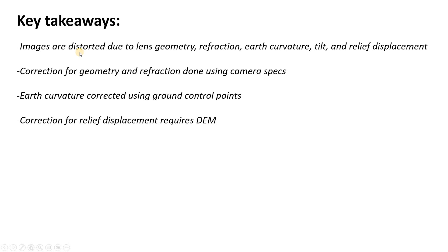We can say that most satellite images are distorted due to lens geometry, light refraction, earth curvature, tilt, and relief displacement. Correction for geometry and refraction is done using the camera specifications. Earth curvature is corrected using ground control points. And correction for that relief displacement requires a digital elevation model and some of the geometric assumptions we just went through. Thanks for listening.